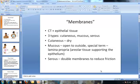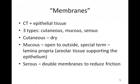There are going to be three types of membranes. Membranes are when we take epithelial tissue plus the underlying connective tissue and add them together. The three types of membranes that we have in the body are cutaneous membranes, mucous membranes, and serous membranes.